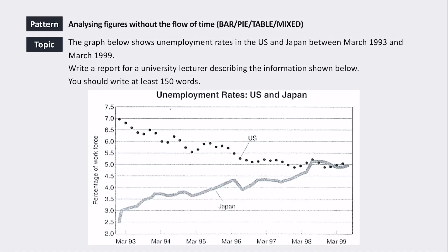We're going to look at an IELTS Task 1 essay with a classic line graph showing change over time. The graph shows unemployment rates in the US and Japan between March 1993 and March 1999. The task is to write a report for a university lecturer describing the information.